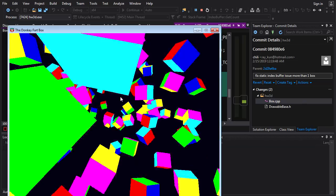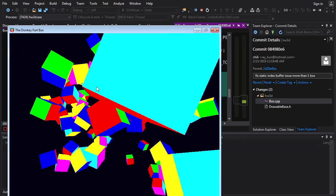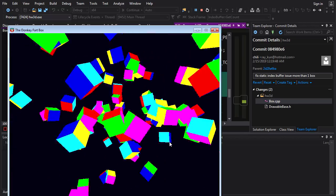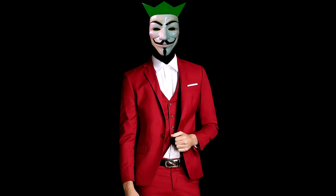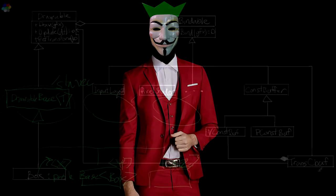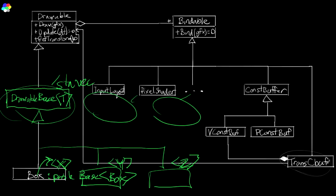Doing this, it now works perfectly fine. Only now we don't have all that duplication of the identical vertex shader, pixel shader, and all that — it's all being shared between instances of Box. The only thing different for each box is its transform constant buffer. Everything else is shared. Our system is shaping up pretty nicely, but let's make one more improvement and then call it a day.